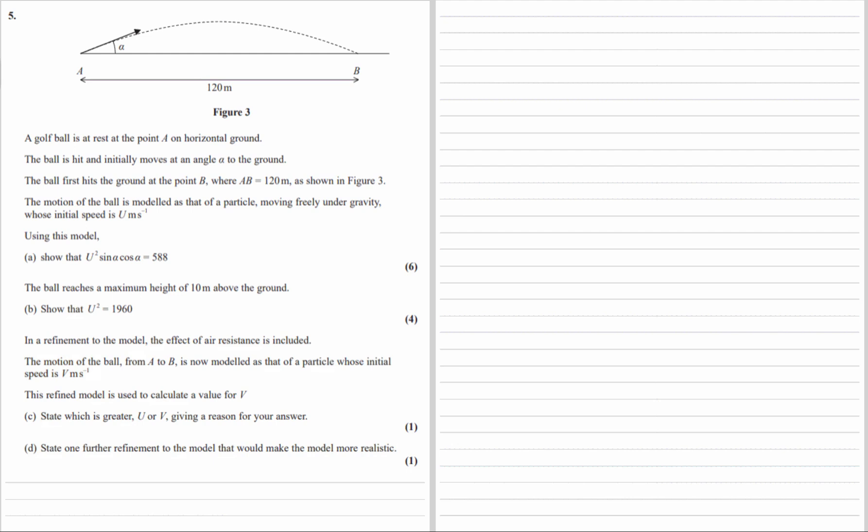A golf ball is at rest at point A on horizontal ground. The ball is hit and initially moves at an angle of alpha to the ground. The ball first hits the ground at point B where AB is 120 metres. The motion of the ball models a particle moving freely under gravity, with initial speed u metres per second. Show that u squared sine alpha cos alpha equals 588.